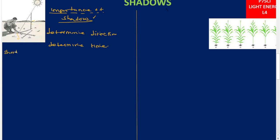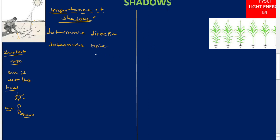We can also use shadows to determine the time of day. During noon, shadows are very short because the sun is overhead. When you look at a person and the sun is directly over their head, the shadow is very short. So the shortest shadows are experienced at noon, and you can use this to tell the time. Shadows can also provide shade, which is very useful to us.